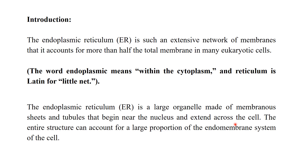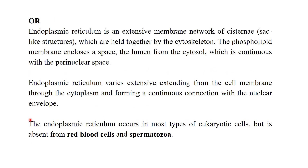The entire structure can account for a large proportion of the cell membrane. We can also define the endoplasmic reticulum as an extensive membrane network of cisternae — sac-like structures — which are held together by the cytoskeleton. The phospholipid membrane encloses a space called the lumen, which is continuous with the perinuclear space. The endoplasmic reticulum varies extensively, extending from the cell membrane through the cytoplasm and forming a continuous connection with the nuclear envelope.